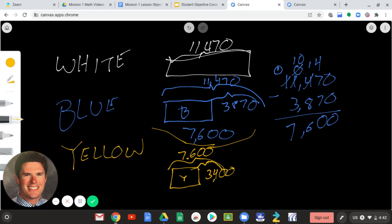And how can we figure out, then, what, how much yellow paper it is? Well, we take our, what our blue was, which was 7,600, and we subtract 3,400.